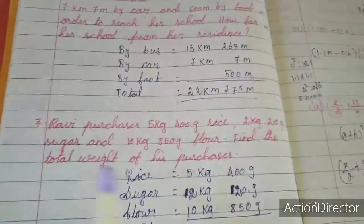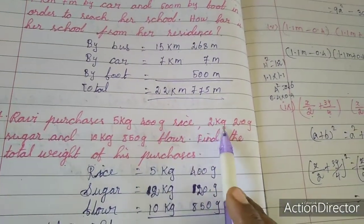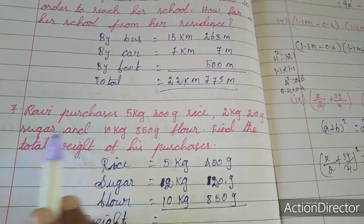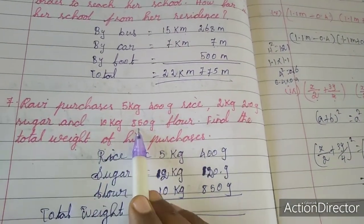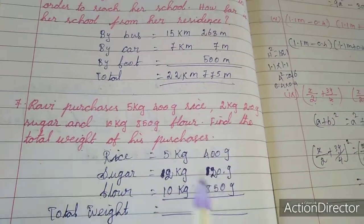Now 7th sum. See here Ravi purchases 5 kg 400 g rice, 2 kg 20 g sugar and 10 kg 850 g flour. Find the total weight of his purchases.